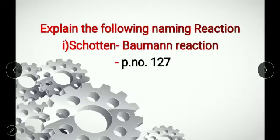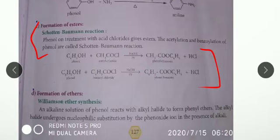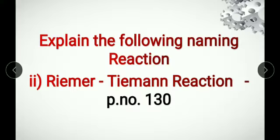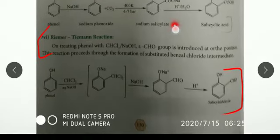Let us recall all the questions. First question: Schotten-Baumann reaction on page number 127 — formation of ester. Then second question: Reimer-Tiemann reaction on page number 130, given at the last of the page.